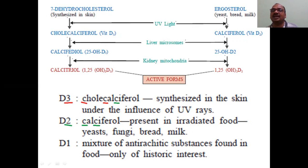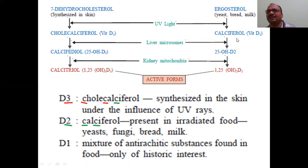Ergosterol is converted into calciferol — only two C's are there, so it is D2. Cholecalciferol has three C's — D3. Ergosterol is the starting material for D2, and cholesterol/dehydrocholesterol is the starting material for D3.